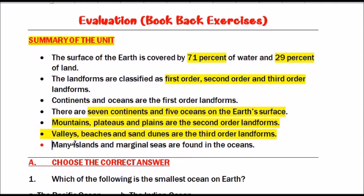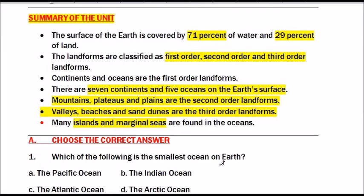Many islands and marginal seas are found in the oceans. An island is a land surrounded by water on all sides. A bay is a broad inlet of the sea where the land curves inward. A strait is a narrow stretch of land linking two large water bodies. A trench is the deepest part of the ocean. The land surrounded by water on three sides is called a peninsula. Now let us see the evaluation.